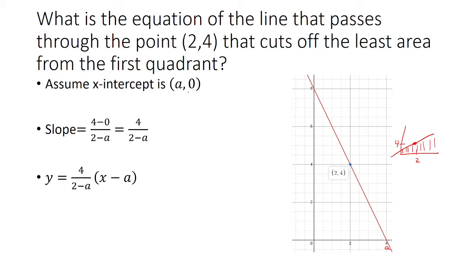So we know that y₀ is 0 because we're using this point. And then we have the slope is 4 over 2 minus A, x minus, and then the x value here is A.